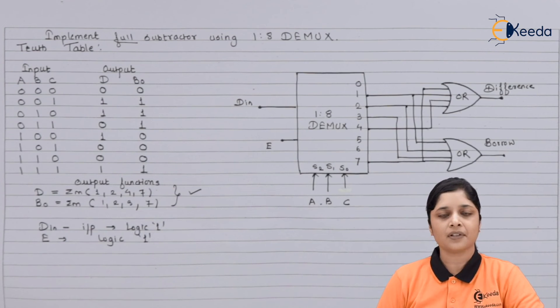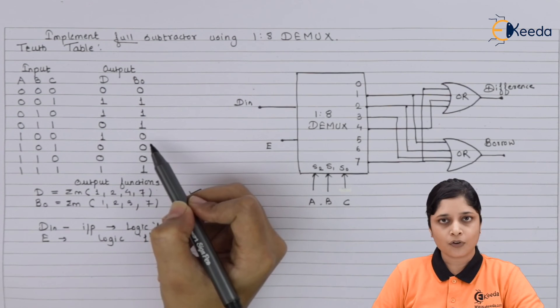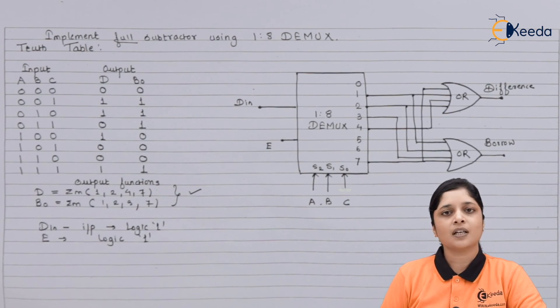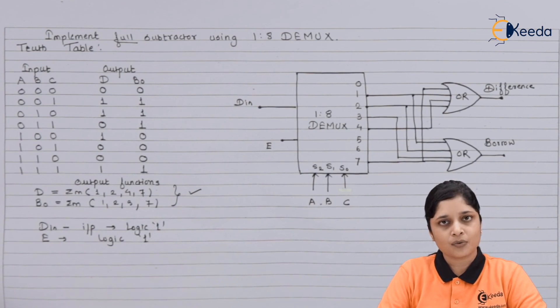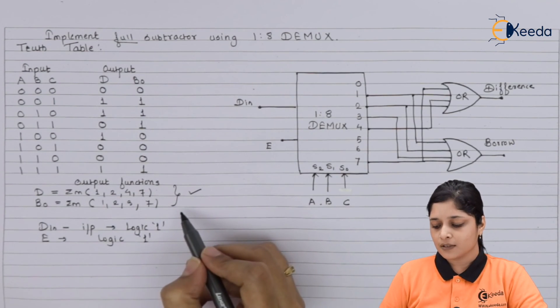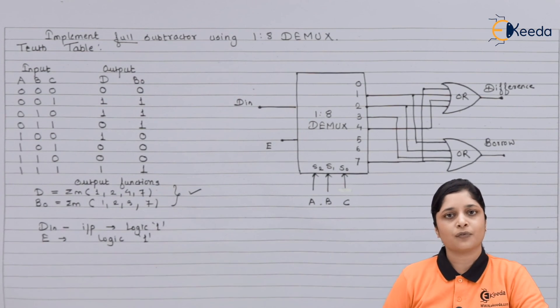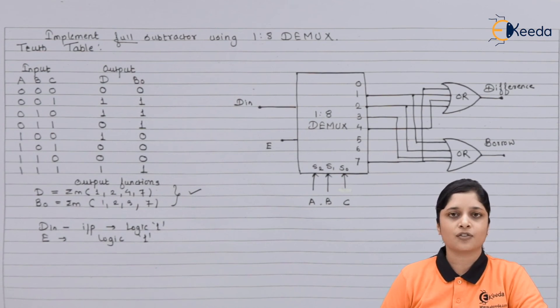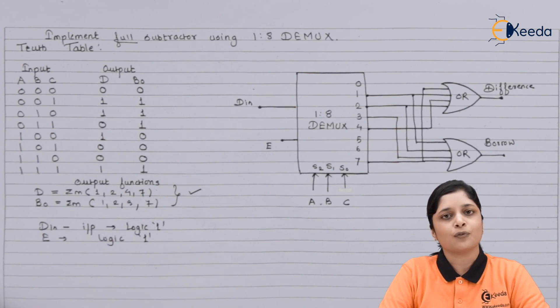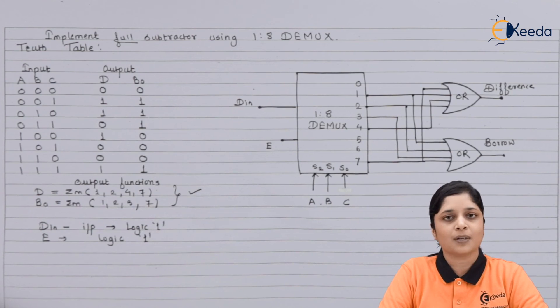So overall, we wrote the truth table for the full subtractor using binary subtraction rules and got the results for difference and borrow. After that we formed the expressions for difference and borrow, and then did the realization using a 1-to-8 demultiplexer. This is all about the implementation of full subtractor using 1-to-8 demultiplexer. Thank you for watching — stay tuned with Ikeda and subscribe to Ikeda.